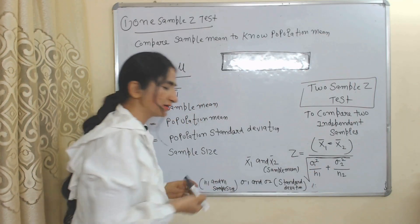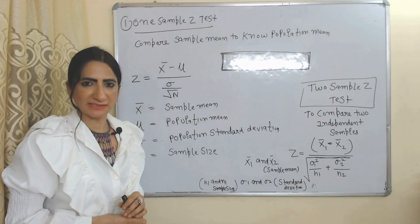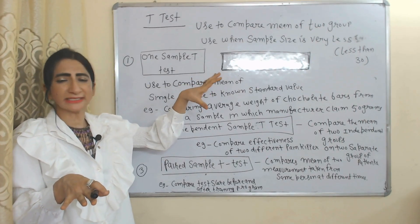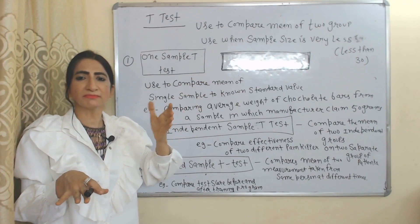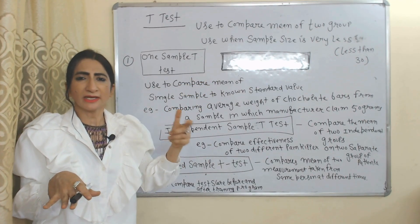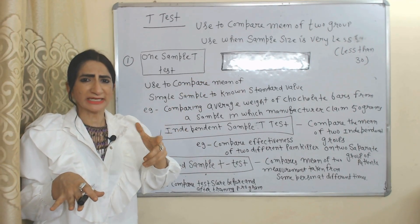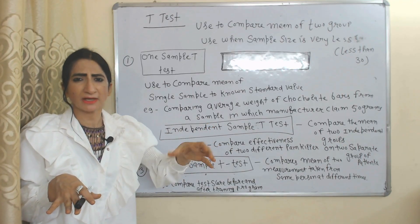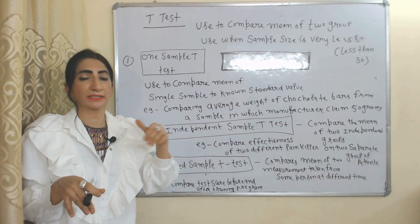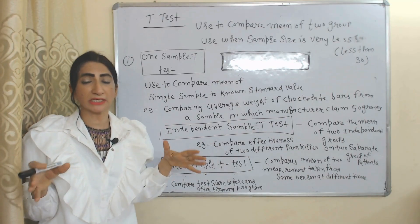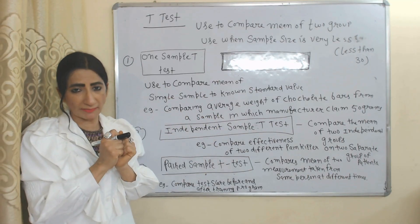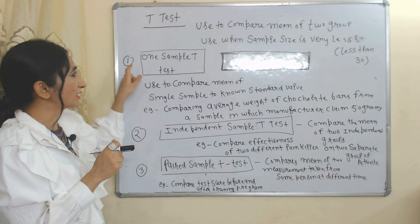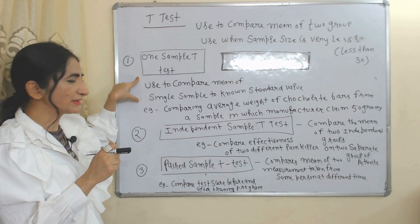Next is the T test. We use the T test to compare the mean of two groups. In the case of T test, we need a small amount of samples — for example, less than 30 — but in the case of Z test we need a large amount of samples. T test is mainly divided into three parts.